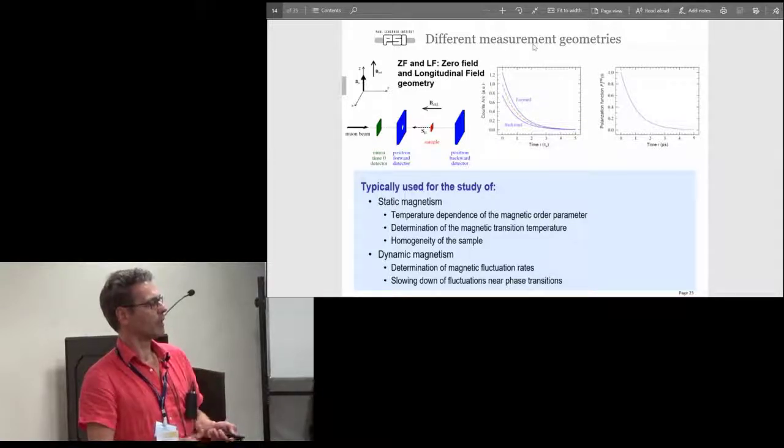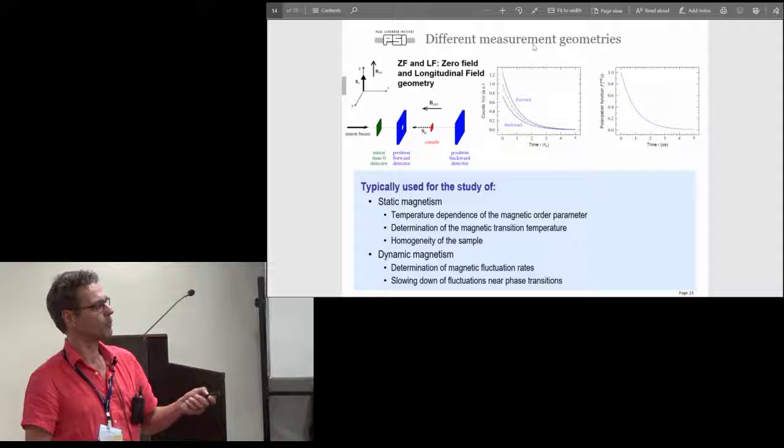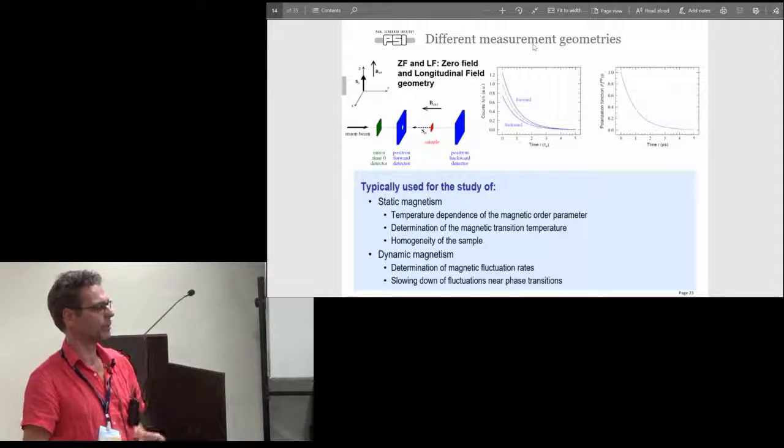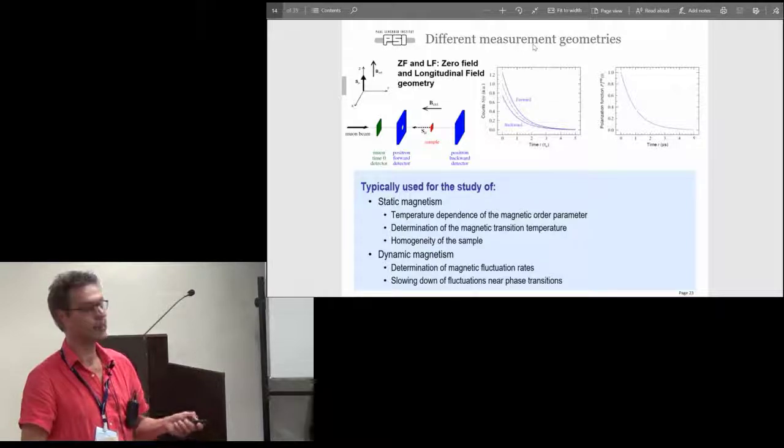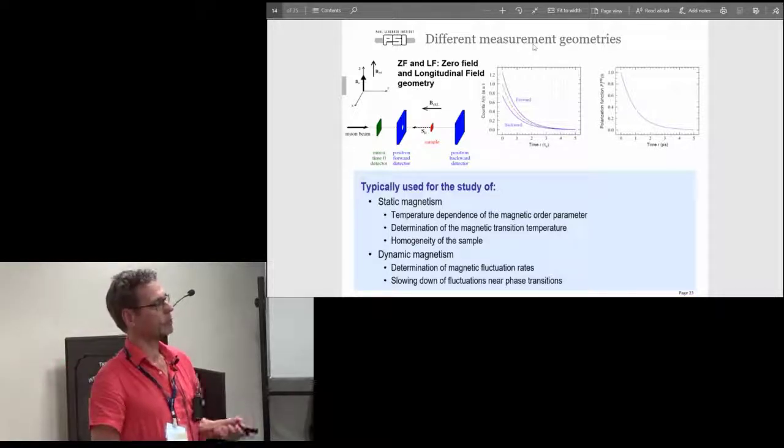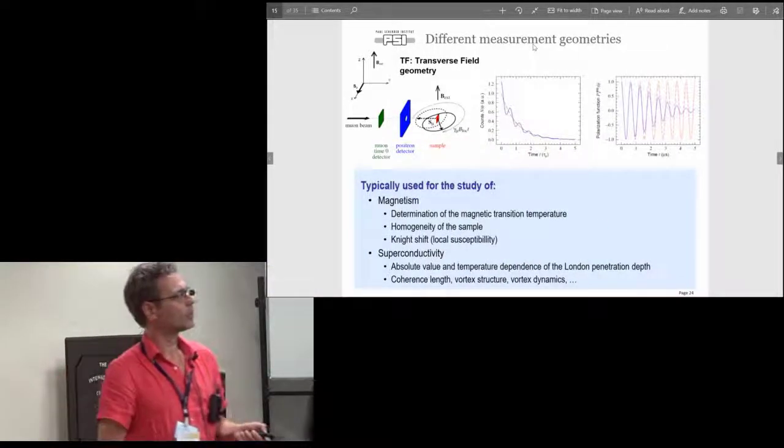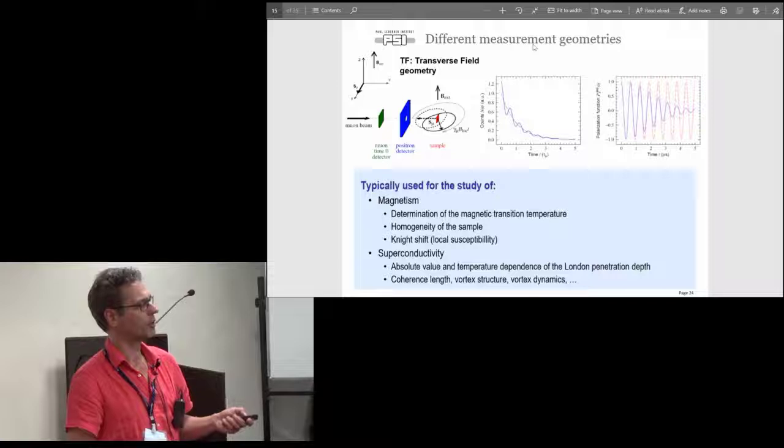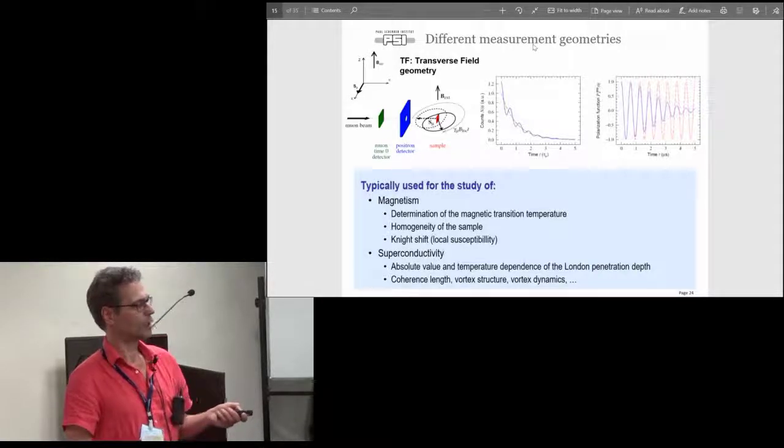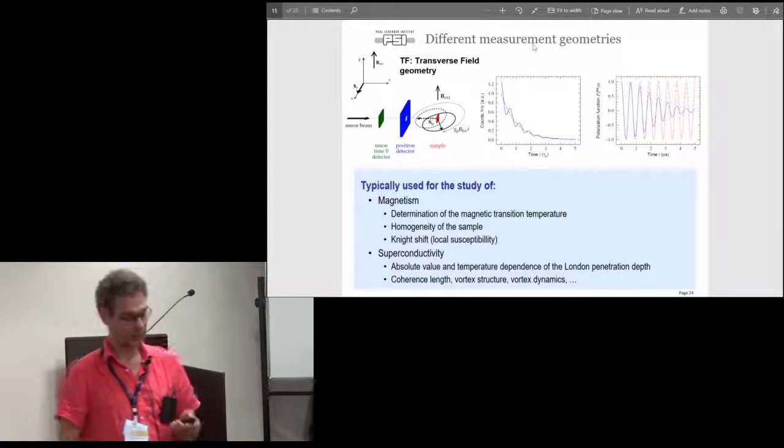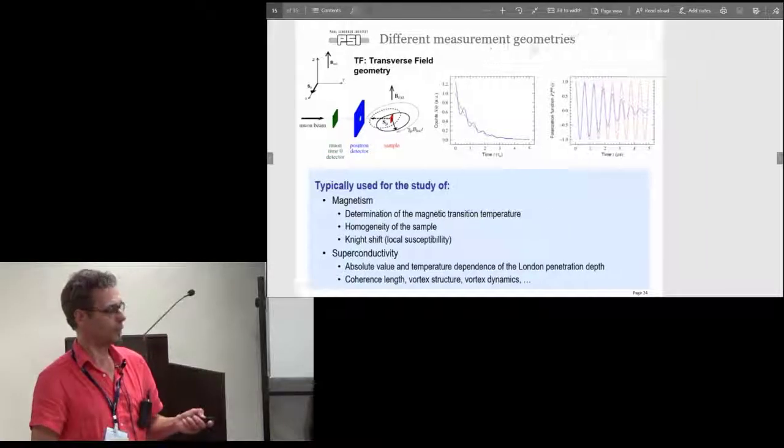We have seen already some general areas where muons are used. Mainly it's a probe to probe static magnetism, to determine the magnetic homogeneity of the sample, temperature dependence of magnetic order parameter, but also we can see the dynamics, magnetic fluctuations, especially close to magnetic phase transitions. In transverse field measurements where you have the precession around the applied field, this is also done in magnetism to measure Knight shifts and homogeneity of the sample. In superconductors, from the vortex states analysis you can get coherence length, vortex structure, and so on. This is a main field of applications.